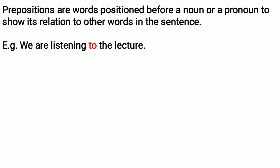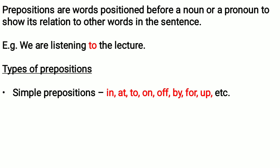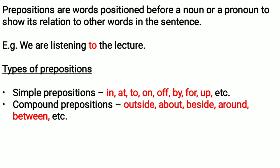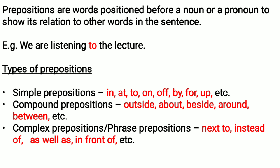Prepositions are those words which connect nouns or pronouns to other words in the sentence. There are different types of prepositions. There are simple prepositions, which are the most common prepositions we use every day. Then we have compound prepositions, sometimes a combination of two words like 'outside,' 'inside,' etc. Then we have complex prepositions, which are more or less phrases — a combination of three words, such as 'as well as' or 'in front of.'